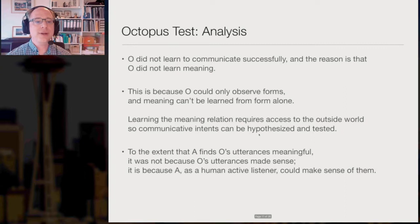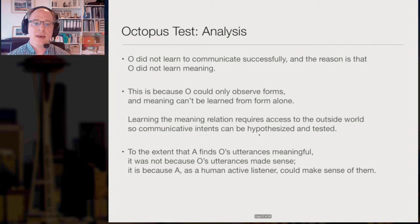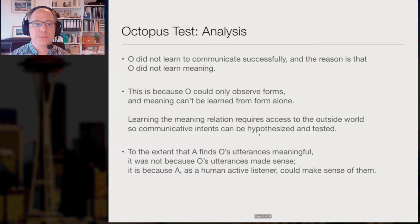Let's analyze this. O did not learn to communicate successfully because O did not learn meaning — and O cannot learn meaning because O could only observe the forms. To the extent that A found O's utterances meaningful, it was not because those were actually meaningful utterances. It's because A managed to make sense of them by being such an active participant in dialogue — actually finding meaning where there wasn't any to be found.